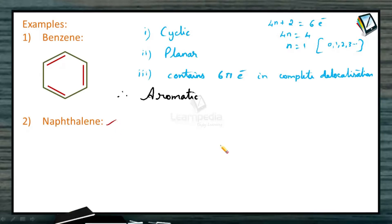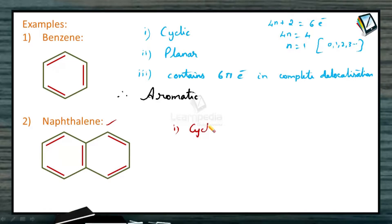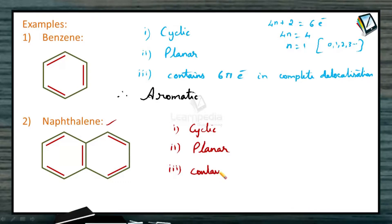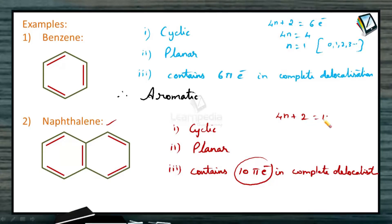The next example is naphthalene. Naphthalene is a cyclic compound, satisfying the first criteria. There is alternating double and single bonds throughout the entire rings, meaning each carbon forms one double bond and two single bonds — so all carbon atoms undergo sp2 hybridization and the molecule is planar. It contains 10 pi electrons from 5 double bonds. Checking: 4n+2 = 10, so 4n = 8 and n = 2, an allowed value. It obeys Huckel's rule, and all three conditions are satisfied — naphthalene is aromatic in nature.